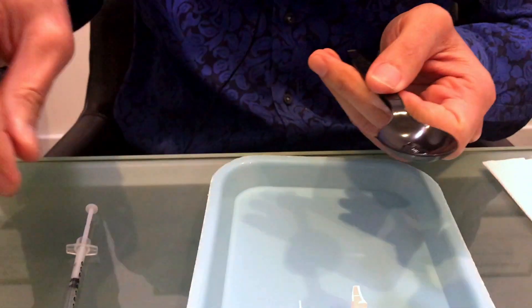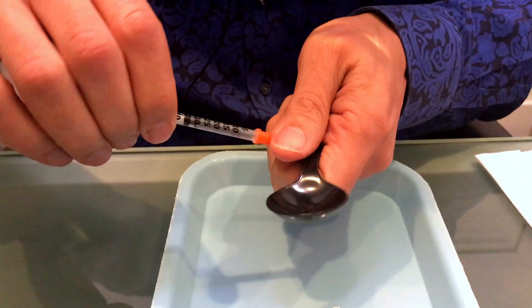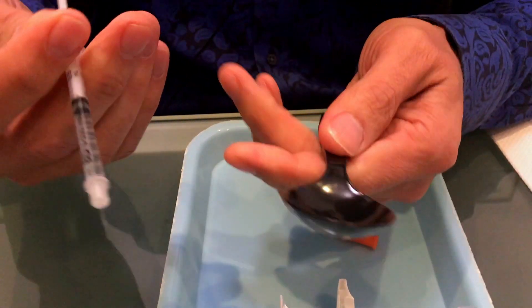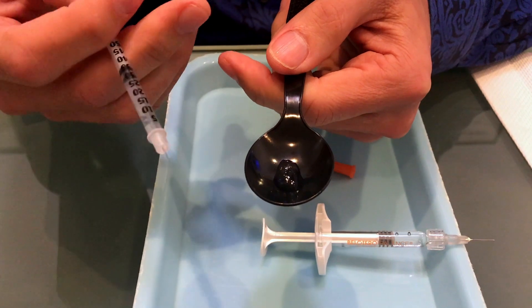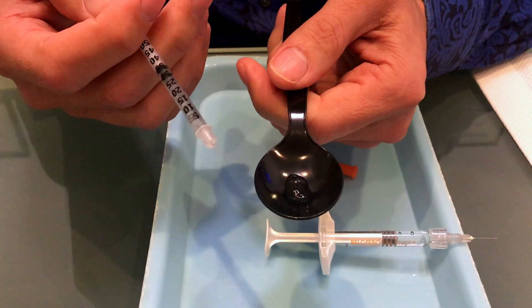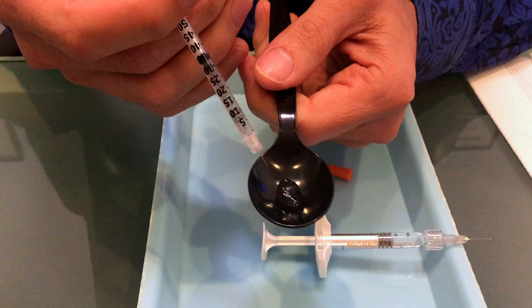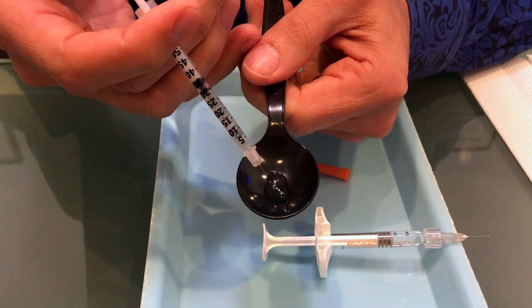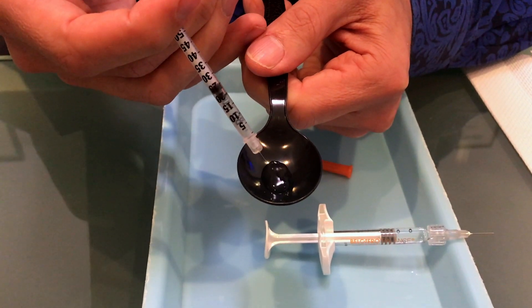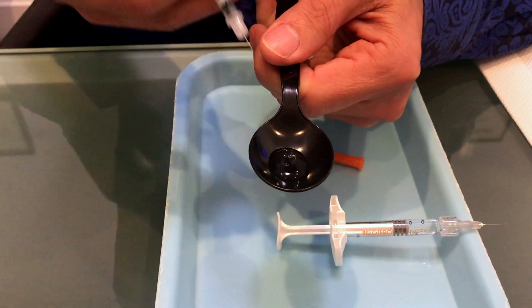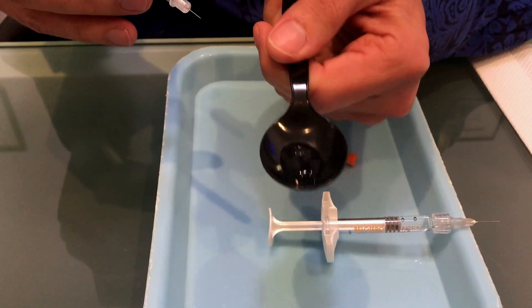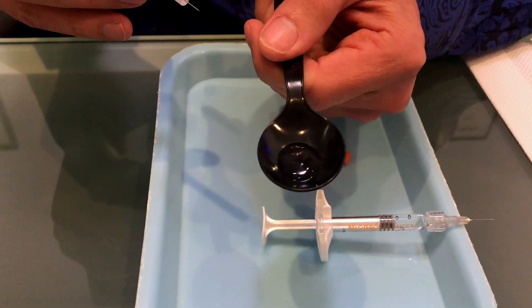Okay and now I want to put in some Hyaluronidase. It's Hylinex and what I've done is I've drawn up 0.3 cc's which is 45 units of Hylinex. I'm going to put this onto the filler and we're going to watch how it dissolves and I don't know if this is enough but we're just going to watch and what you're going to see is that it dissolves it very quickly.